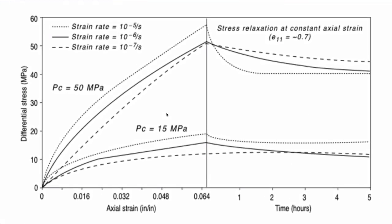Here's an example of stress relaxation. There are a couple of things going on. These tests were actually carried out at three different strain rates — all pretty slow. You do see that the material response over the three strain rates changes, which is fairly characteristic for many materials.